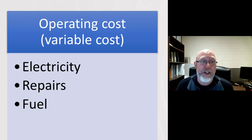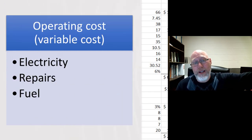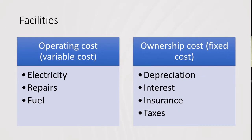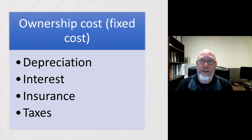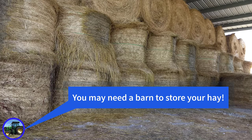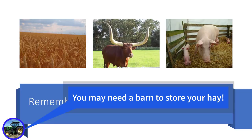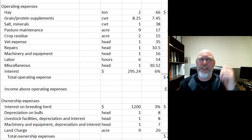Those facilities have a lot of different types of costs associated with them. If you're running a dairy barn, there's going to be electricity, repairs, fuel for heaters, and all of the various ownership costs. We don't want to overlook these — these are things that might not pop up in a crop budget but might pop up in a livestock budget. You're going to need a barn of some type if you have livestock. And remember to prorate across enterprises. To learn more about enterprise budgets, click right here.